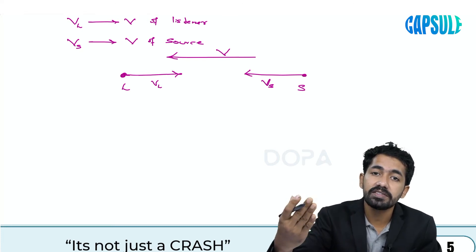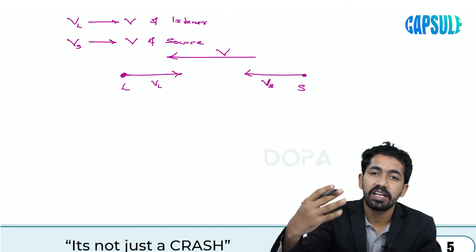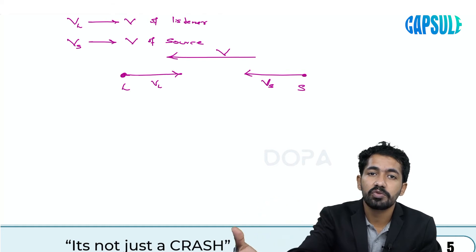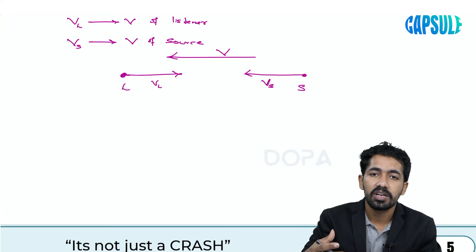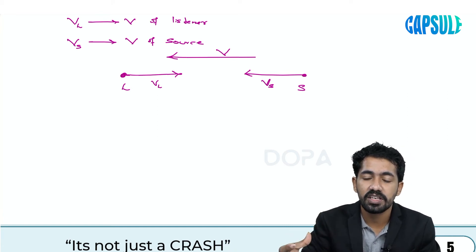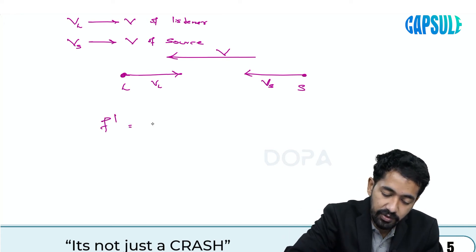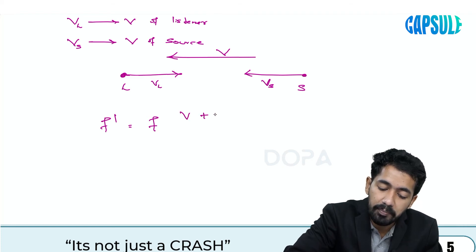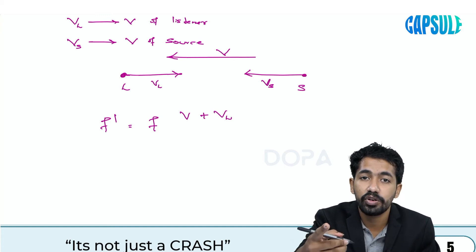When they are approaching each other, the frequency will definitely increase. You know that whenever you are moving towards a speaker, or the speaker is moving towards you, the frequency of the sound increases. So f-dash equals f times (v plus vl) — the frequency should increase, so the numerator increases.